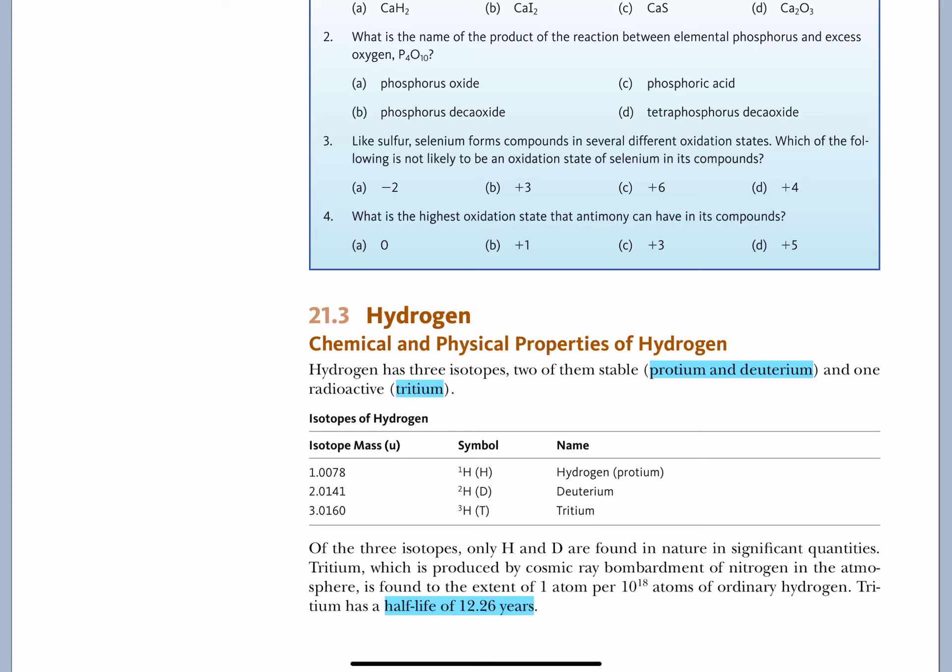And you can make all the compounds that you make out of hydrogen, such as water and ammonia, using not just protium, but deuterium and tritium as well. Tritium of these three is radioactive. It is unstable. It has a half-life of a little over 12 years.